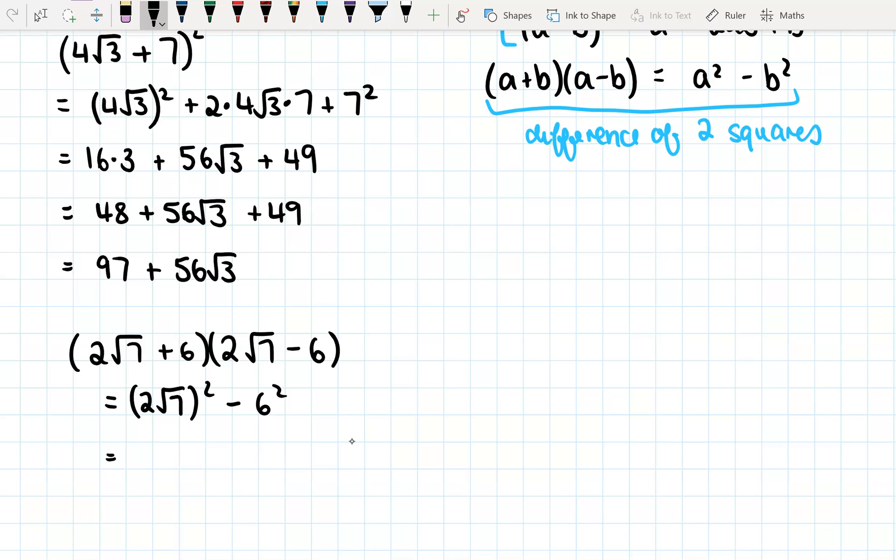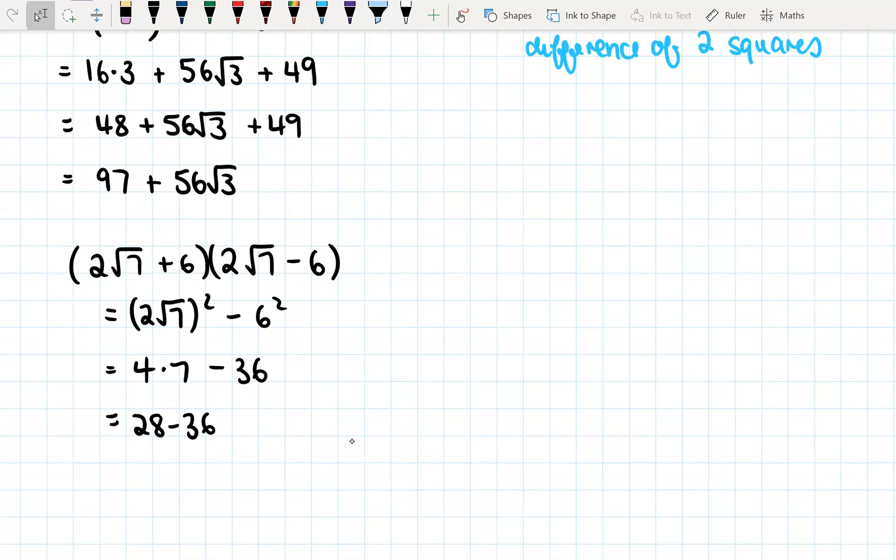Okay, so (2√7)² becomes 2² times 7 minus 36. So 2², we know it's 4. Let's just write that. 4 times 7 is 28 minus 36. So in this case, we have an answer of -8.